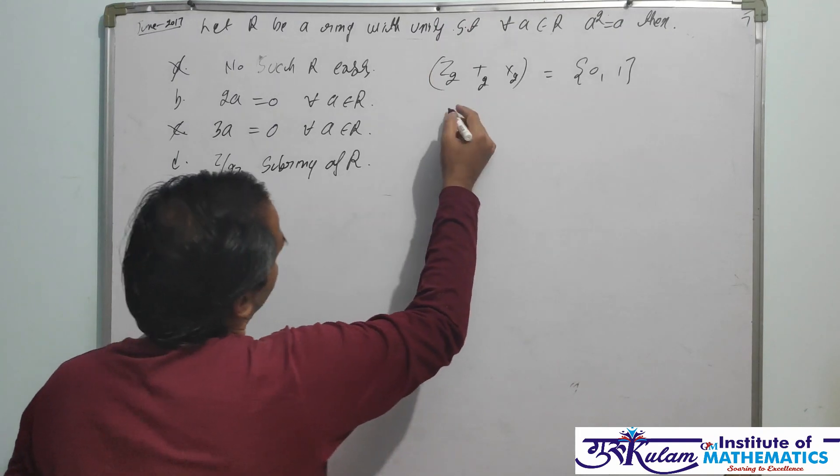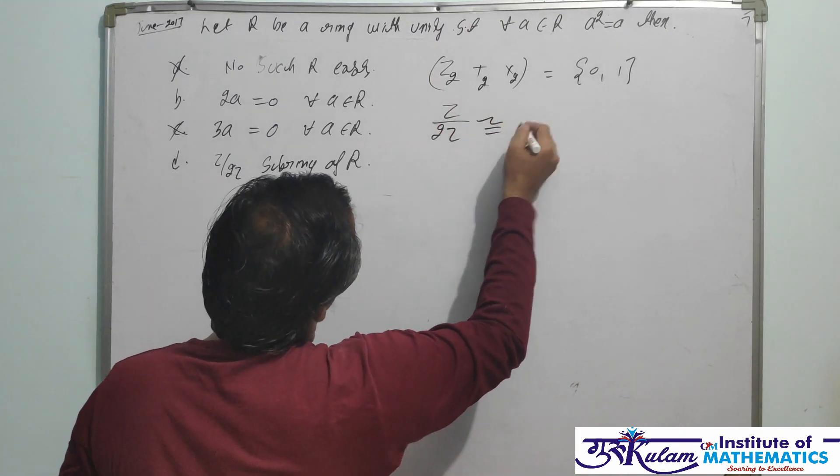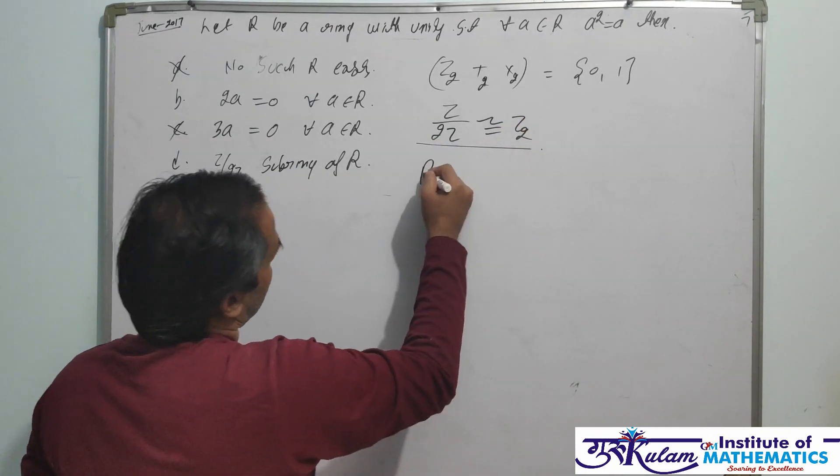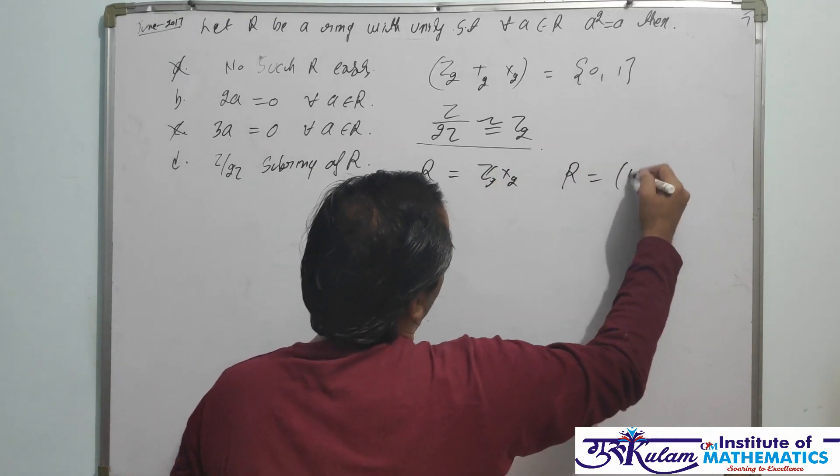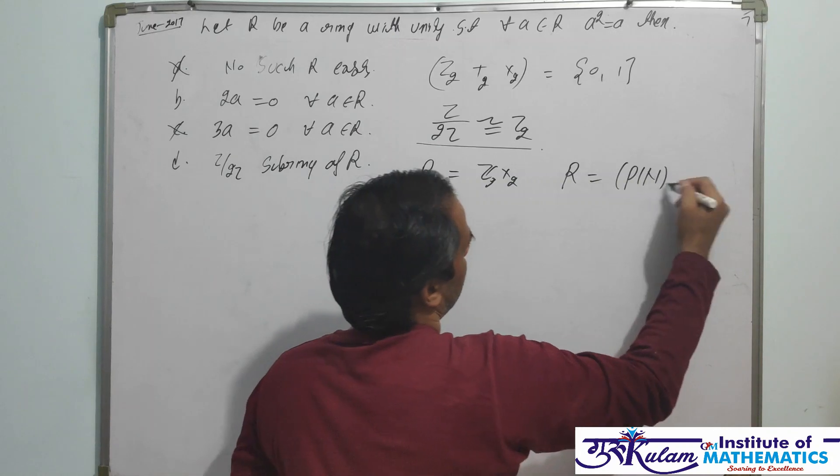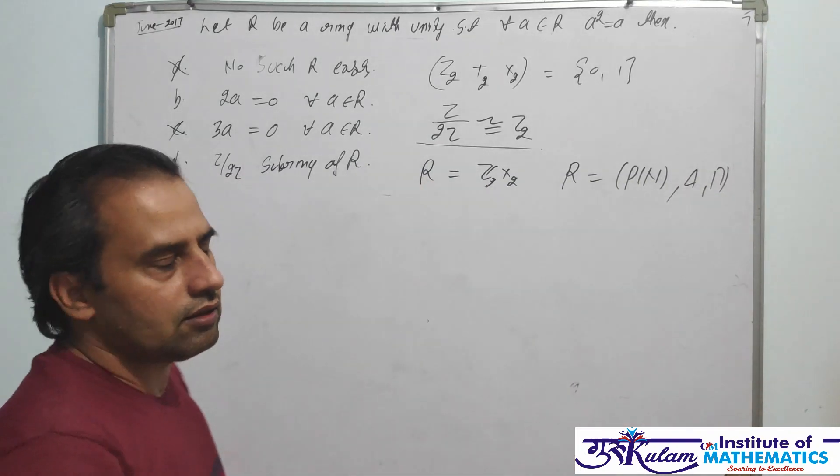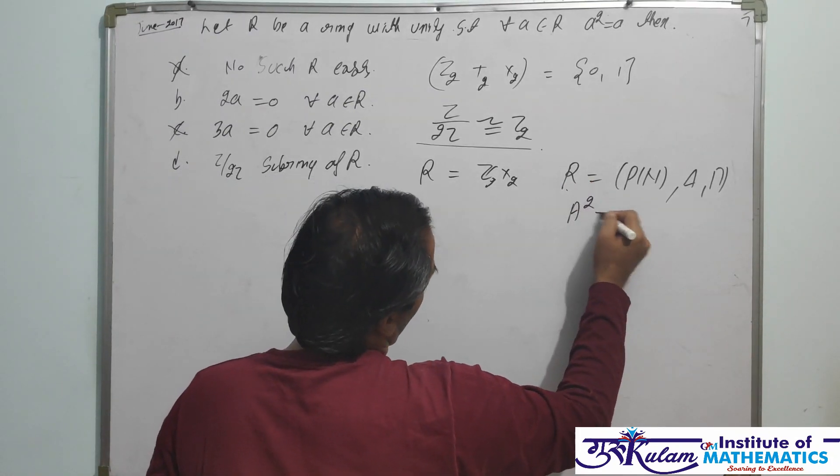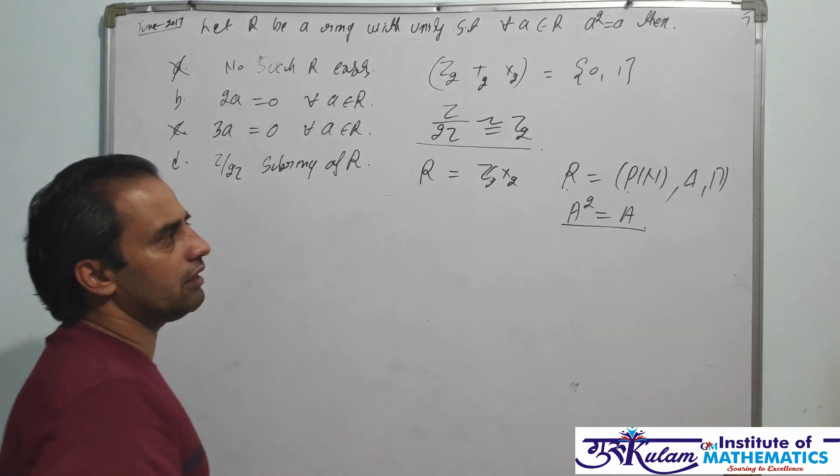Z2 or Z by 2Z is always isomorphic to Z2. But we can take R which can be Z2 × Z2, or R can be the power set of natural numbers with symmetric difference and intersection. You can easily verify in this R, A² is always equal to A. That is, every element is idempotent.